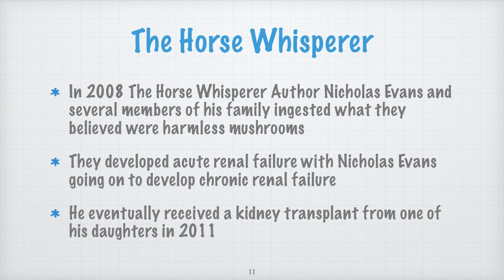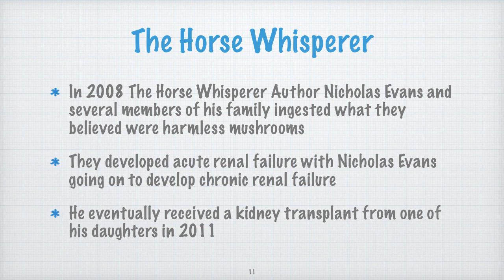Renal support is important too — monitor blood chemistry for elevation in BUN and creatinine, and monitor urinary output. Penicillin G may be protective for the kidneys. Fluid therapy to maintain renal perfusion, diuretics to promote renal output, and potentially renal replacement therapy or dialysis with severe acute kidney injury. In some cases, liver and/or kidney transplant may be required. The classic case study is the 'Horse Whisperer' case — author Nicholas Evans and several family members in 2008 ingested Amanita phalloides, developed acute renal failure, and Evans ultimately received a transplanted kidney from his daughter in 2011.